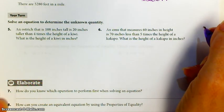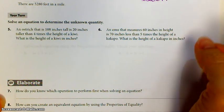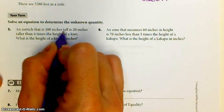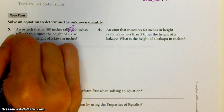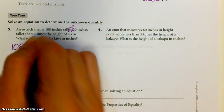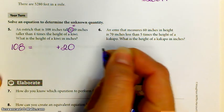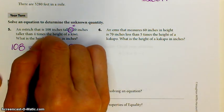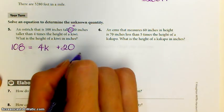A couple more examples. An ostrich that's 108 inches tall is 20 inches taller than four times the height of a kiwi. What is the height of a kiwi in inches? An ostrich that's 108 inches tall is, is means equals, so 108 inches is 20 inches taller than four times the height of a kiwi. So whatever four times the height of a kiwi is, I'll use K for kiwi, plus 20.